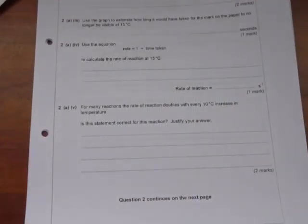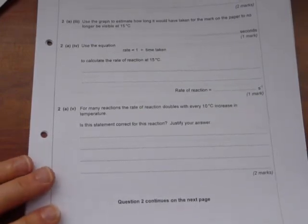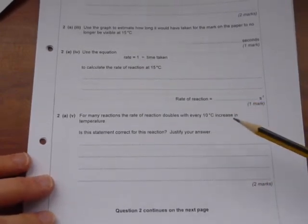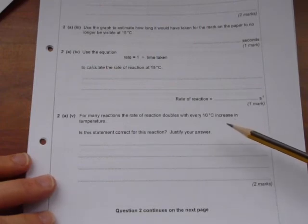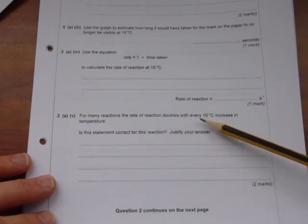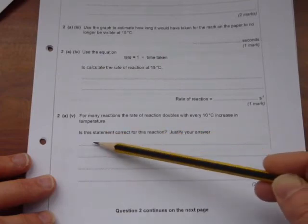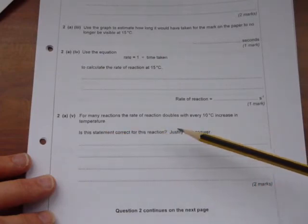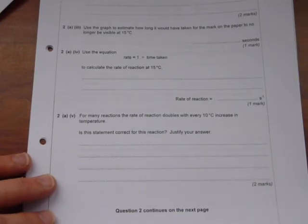The new GCSE syllabus is quite mathematical in its content. Here is a good maths question that you need to try and answer. It's worth two marks. It says: for many reactions, the rate of reaction doubles with every ten degrees C increase in temperature. Is this statement correct for this reaction? Justify your answer. It's only worth two marks, but there's quite a lot you have to do.